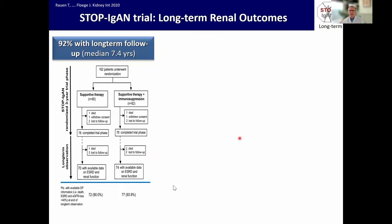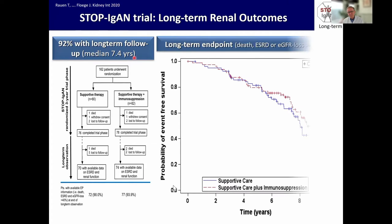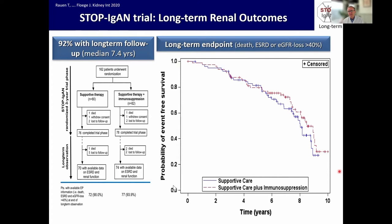This restrictive approach, at least in Europe, is confirmed by the STOP-IGA trial, where we recently published the long-term outcome data after a median of 7.4 years. You can see that if you look at death, end-stage kidney disease, and GFR loss above 40%, there is zero benefit from immunosuppression.